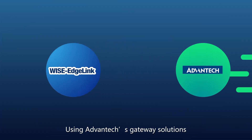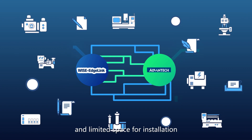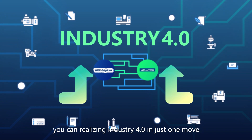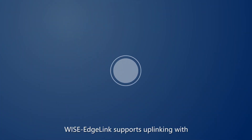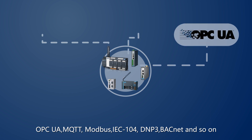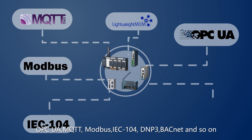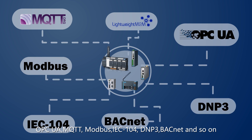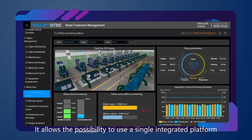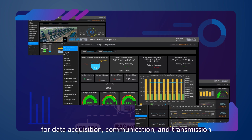Using Advantech gateway solutions, despite the diverse protocols and limited space for installation, you can realize Industry 4.0 in just one move. Wyse EdgeLink supports uplinking with OPC UA, MQTT, Modbus, IEC 104, DNP3, BACnet, and more, allowing the possibility to use a single integrated platform for data acquisition, communication, and transmission.